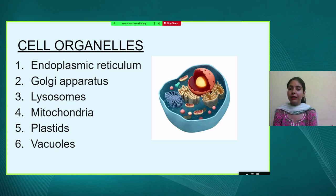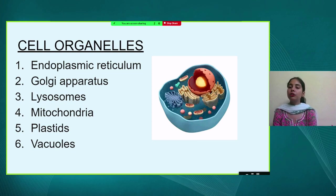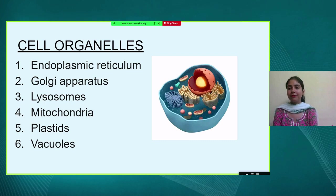I hope that endoplasmic reticulum, Golgi apparatus, lysosomes, mitochondria, plastids, and vacuoles are all clear to you. They all function simultaneously, and if any one is not functioning properly, the metabolism of the cell is disturbed. Thank you, that covers our session on the Fundamental Units of Life.